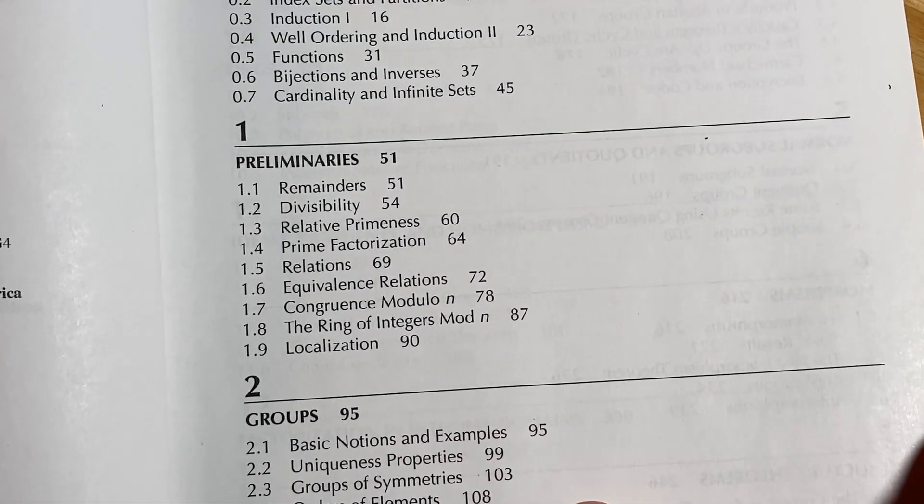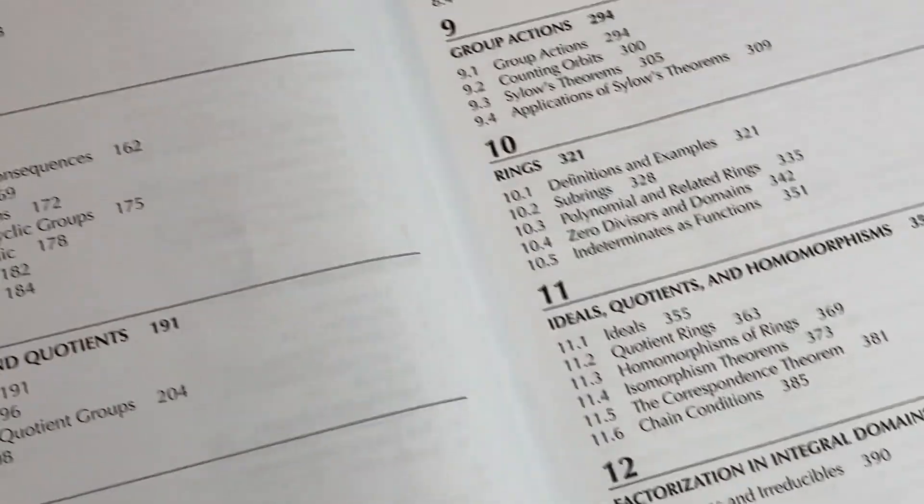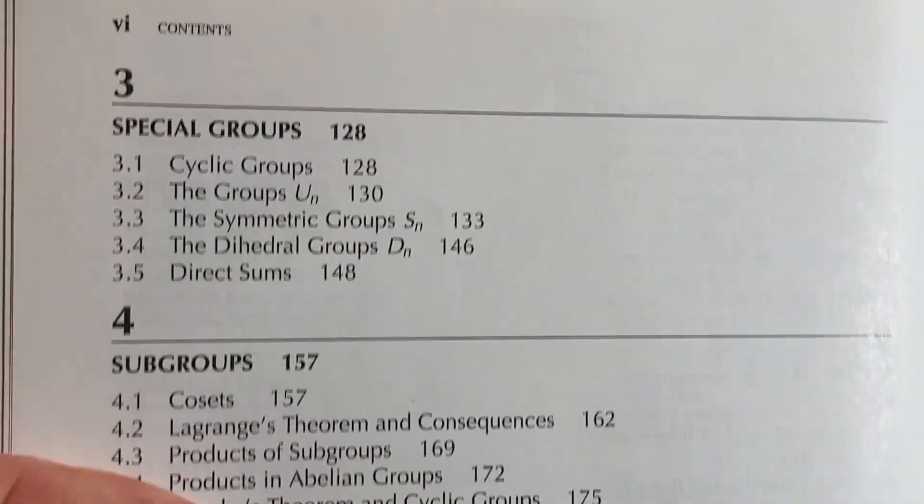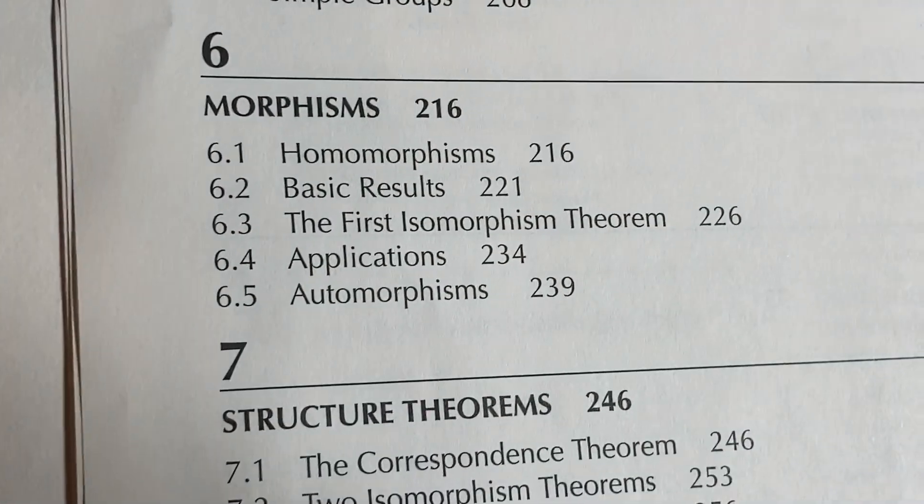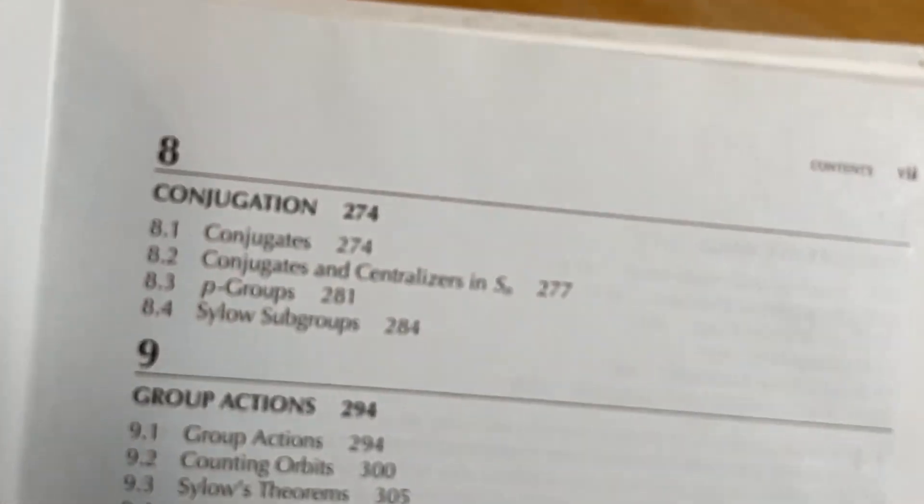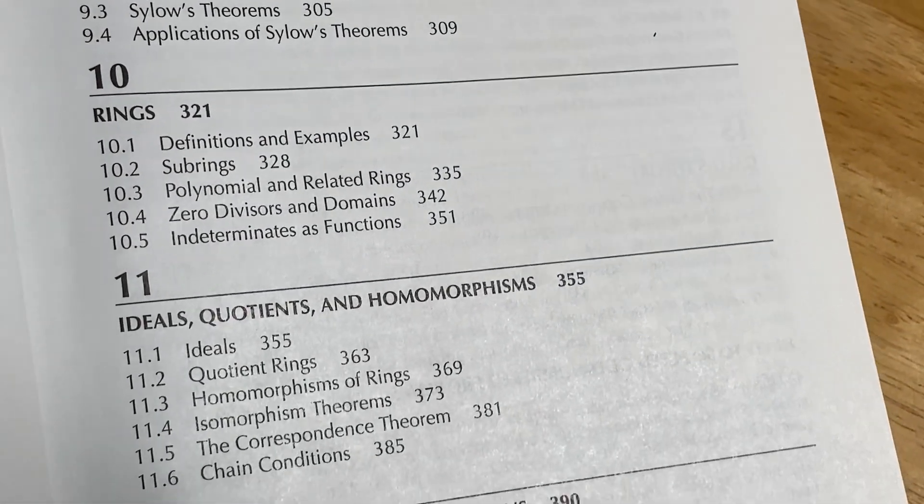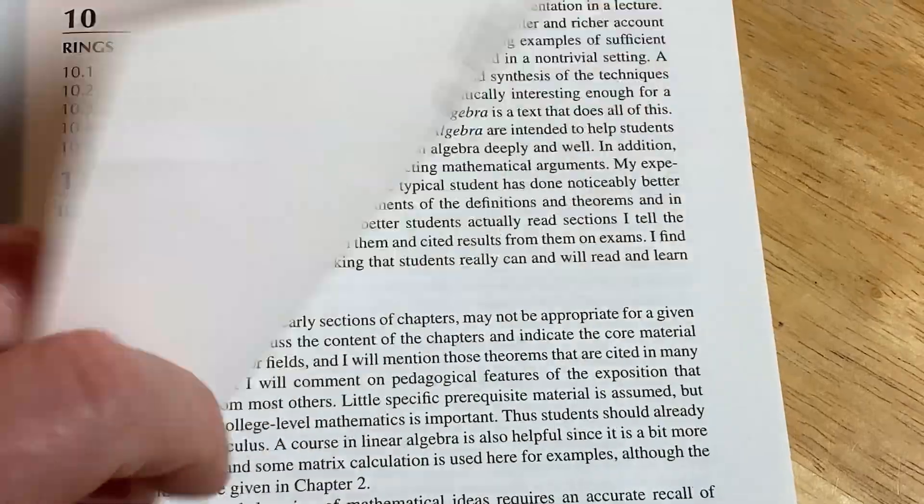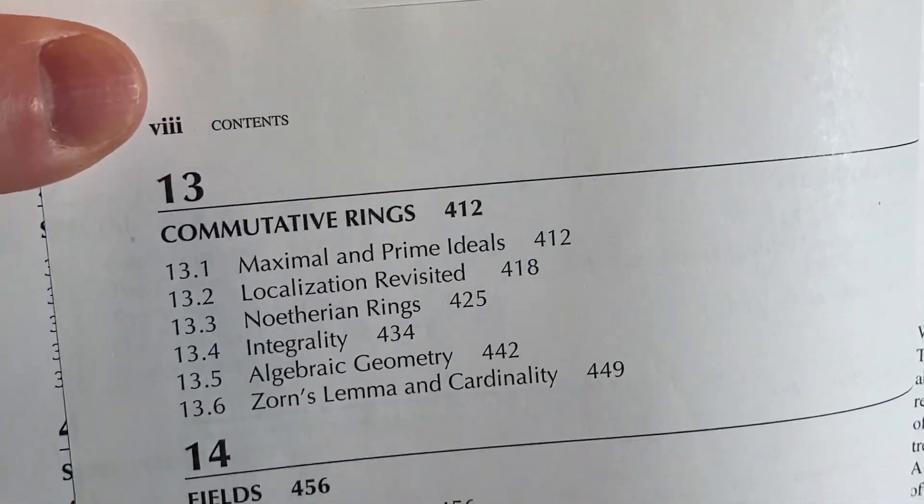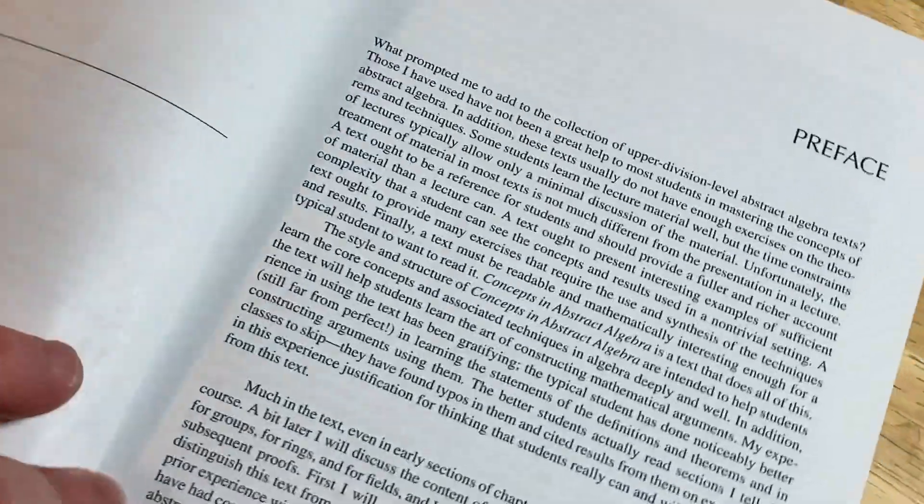Some preliminaries. And then he goes into groups. Then we have special groups, subgroups, normal subgroups and quotients, morphisms, structure theorems, conjugation, group actions, rings, ideals, quotient rings and homomorphisms, factorization and integral domains. I remember reading this. I spent some time with this book. I've used it for self-study as an undergrad and as an independent study I did with a professor. Commutative Rings, Fields and Galois Theory. I spent a lot of time on the Noetherian ring stuff when I was an undergrad.